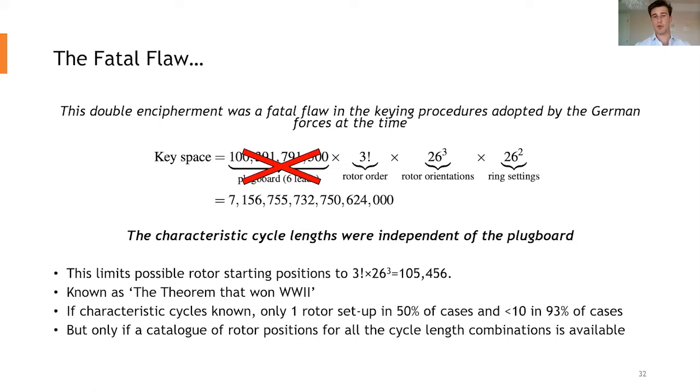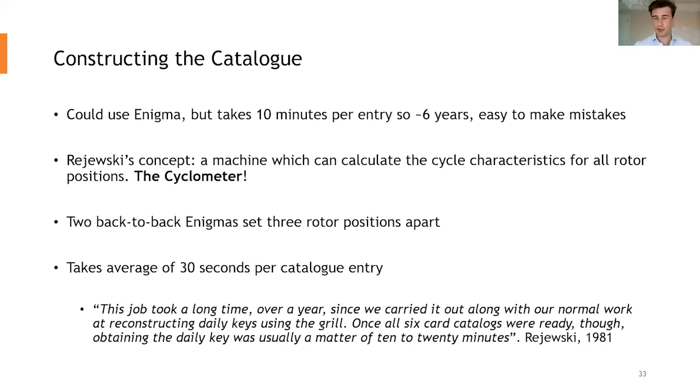And what you find is that if these characteristic cycles and cycles are known, so if you could say we've got a big yellow page book, say, of 105,456 Enigma setups, these characteristics are unique in 50% of cases. So if you can find out those characteristic lengths for a given day, you can look up in the book and in 50% of the cases, that only corresponds to one rotor setup. And in 93% of cases, fewer than 10. Now this is only possible, of course, if you have this catalogue. And how do you go about constructing a catalogue?